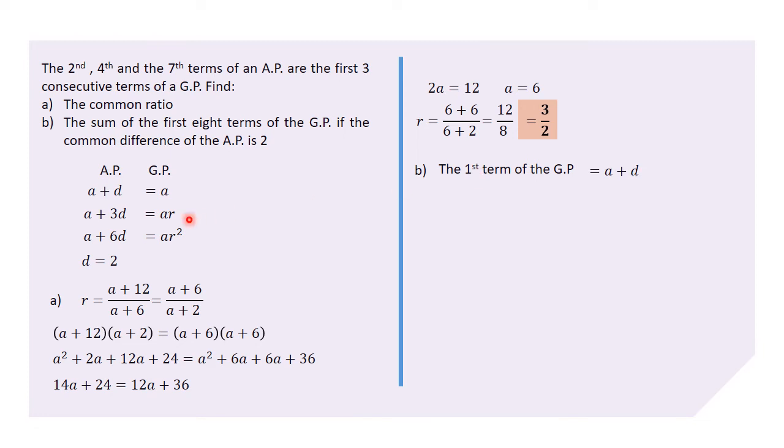However, we know the first term for the GP is given by this expression a + d, and we know that a is 6, we know that d is 2. Therefore, a + d being 6 + 2 gives us 8, which is the first term for the GP. So now we have everything we can use in the formula.